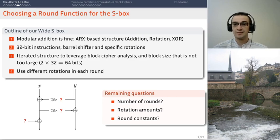Questions remain, how many rounds do we need? So how many iterations of that? What are the rotation amounts that we need? These rotation amounts will decide the cryptographic properties as well as the implementation properties. So we have to choose them very carefully. And also what sort of round constants do we want?